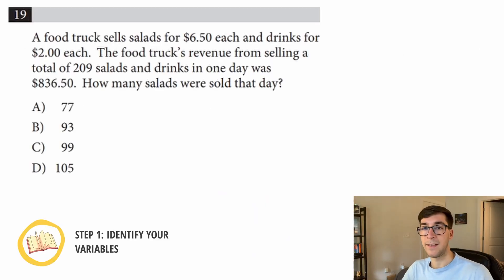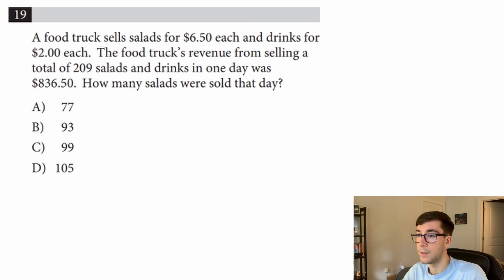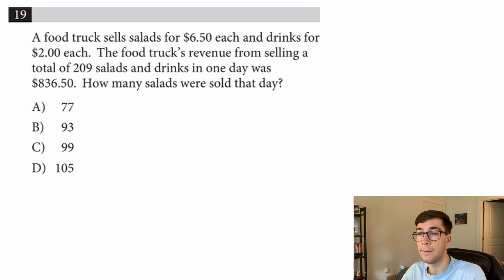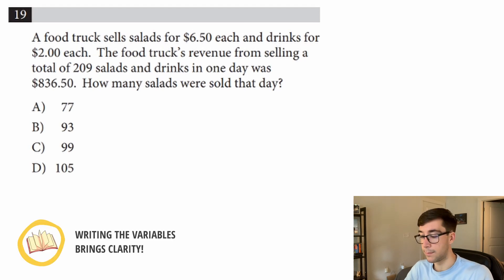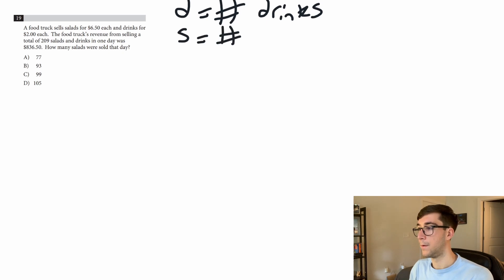Step one is identifying your variables. Let's read this question: a food truck sells salads for $6.50 each and drinks for $2 each. The food truck's revenue from selling a total of 209 salads and drinks in one day was $836.50. How many salads were sold that day? So we're dealing with drinks and salads. We'll say d equals number of drinks and s equals number of salads.